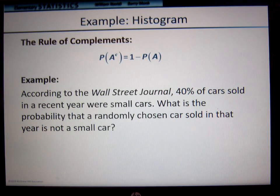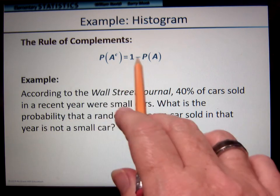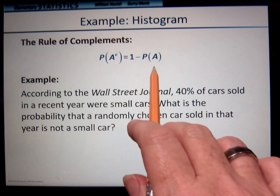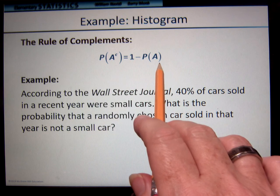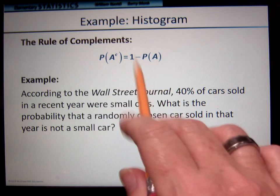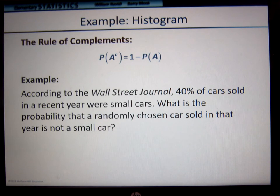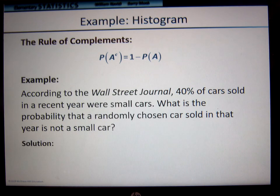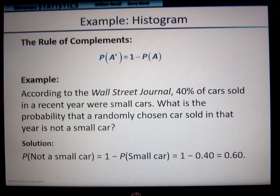The rule of complements states that if you want the probability of the complement of an event, you take 1 minus the probability — keeping in mind that 1 minus the probability is the same as taking 100% minus the percent of that probability. For example, according to a survey, 40% of cars sold in a recent year were small cars. What is the probability that a randomly chosen car is not a small car? The probability of not a small car equals 1 minus 0.40, which gives us 0.60.